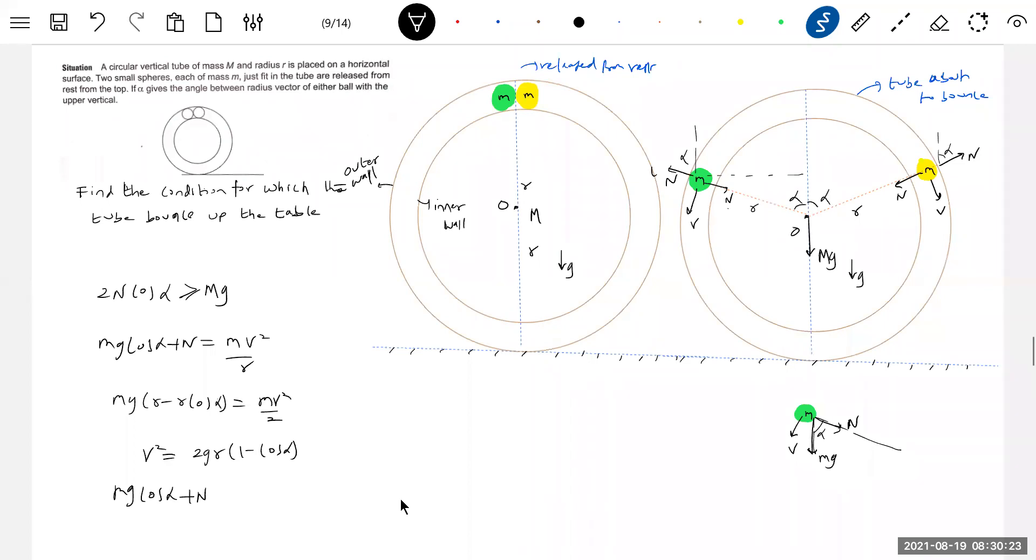mg cos alpha. mg cos alpha. n is equal to 2gr times 1 minus cos alpha, by r. mg cos alpha. n. r will get cancelled, so 2g times 1 minus cos alpha. So n should be equal to - m is missing - 1, m is - n should be equal to 2mg. n should be equal to 3mg cos alpha.